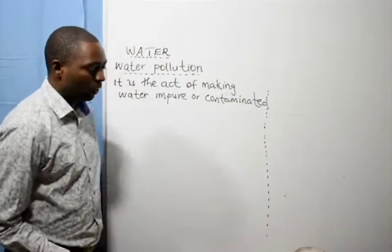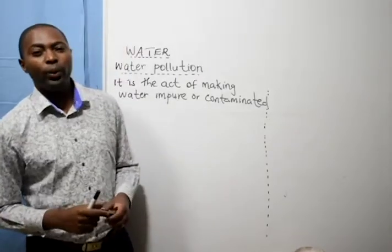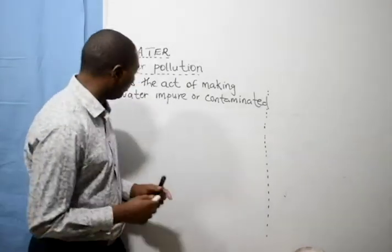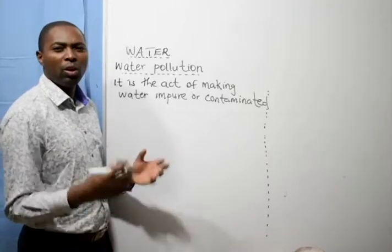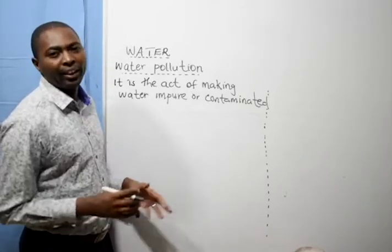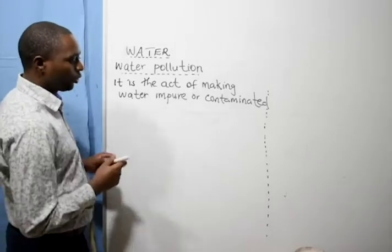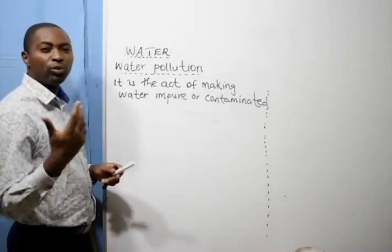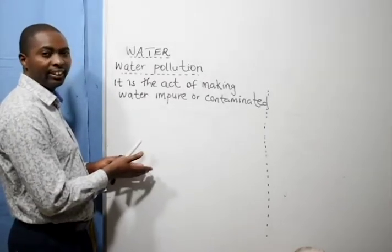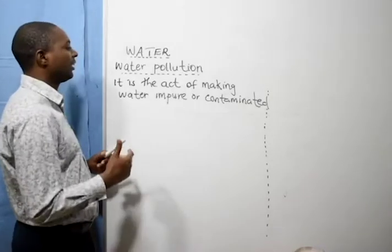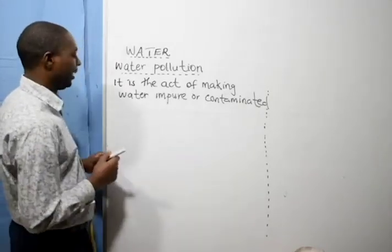When we make water impure or contaminated, we affect living things, because all living things depend on water for survival. Water supports life, so polluted water is harmful to all living things — that is the biotic things — plants and animals.